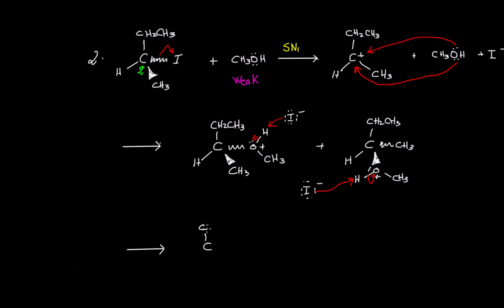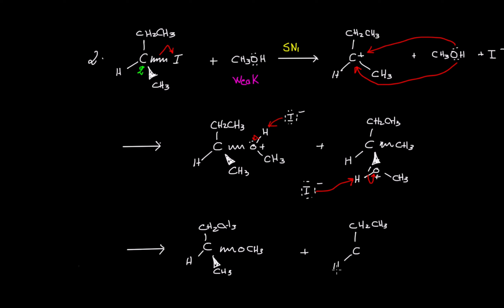The final mixture of products: for the first product I have CH₂CH₃ with hydrogen, the methyl facing forward, and the methoxy on the dashed bond. For the second product I have CH₂CH₃ with H, the methoxy facing forward, and the methyl facing backward.